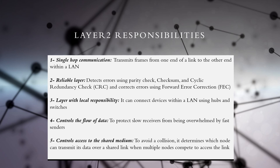The link layer has algorithms to control the flow of data between two devices that work at different speeds. For example, a slow PC with limited memory space and low processing power may not be able to handle data transmitted by a fast server in a LAN. Flow control protects such slow devices from being overwhelmed by fast senders.